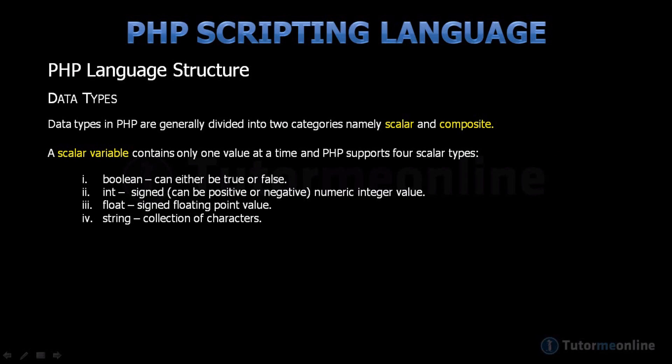Boolean, which can either be true or false. A numeric integer value, which is a number without a decimal point. These can be signed or unsigned — signed meaning they are positive or negative, and unsigned meaning they are only positive, including zero.